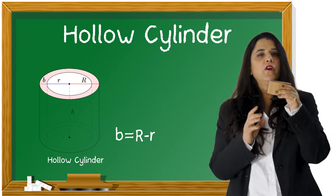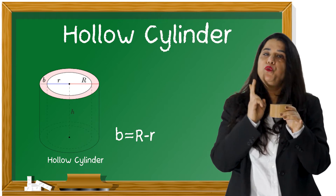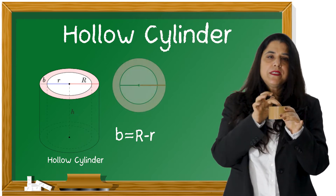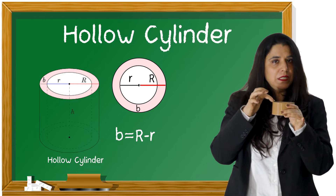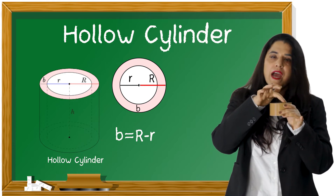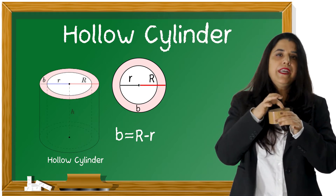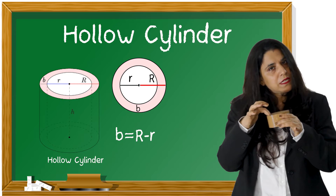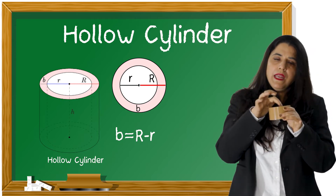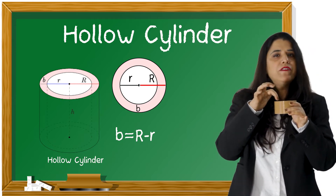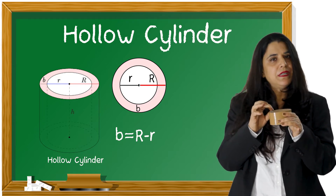Now when we talk of hollow cylinder, we will talk about two radii here. First, we have a circle which is the outer circle and we have a circle which is the inner circle. The radius of the inner circle we will take as small r, and the radius of the outer circle will be taken as capital R.